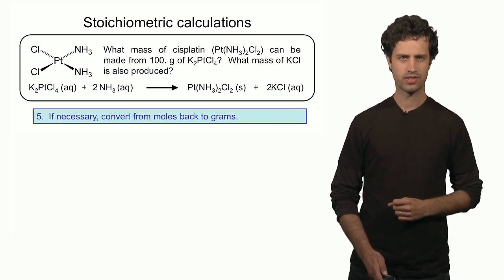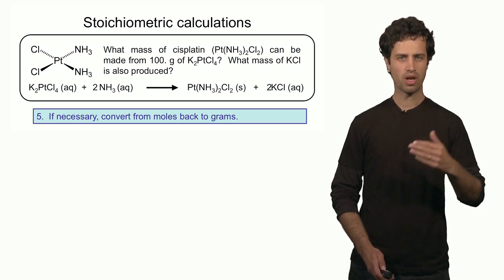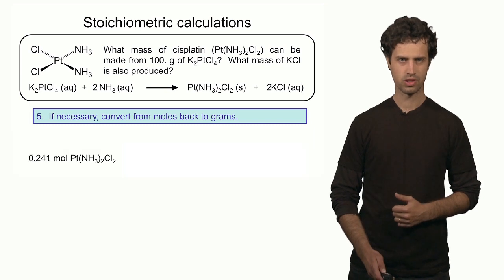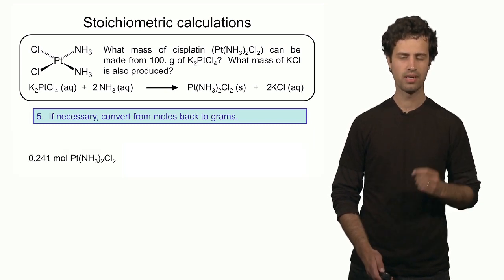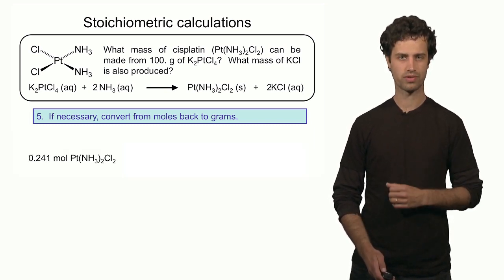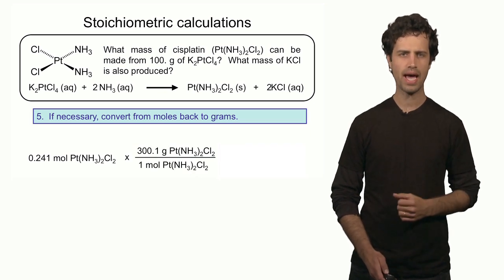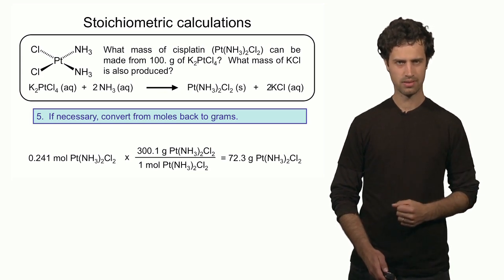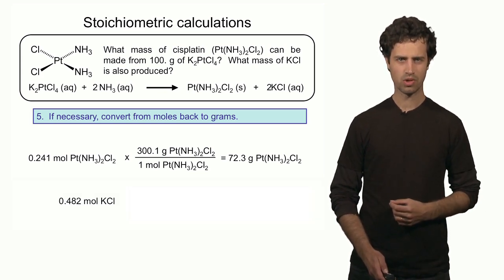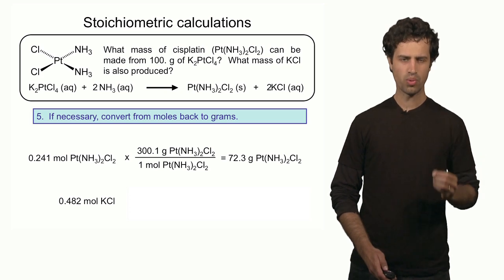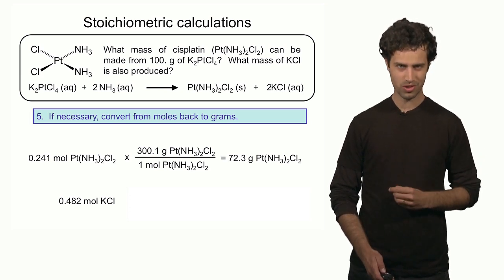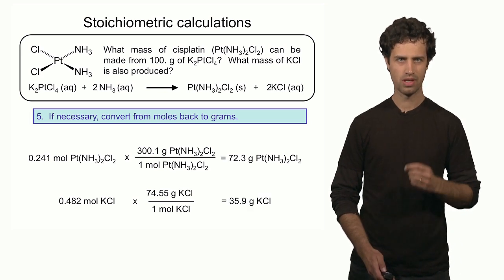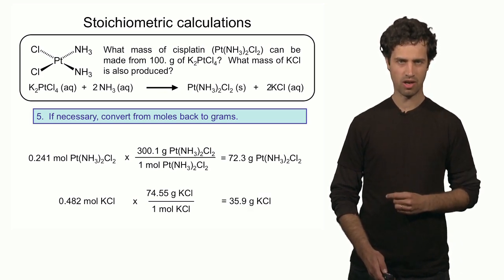The last step is to convert the moles of the products into grams. Taking 0.241 moles of cisplatin and multiplying by its molar mass gives 72.3 grams of cisplatin. For potassium chloride, 0.482 moles times its molar mass gives 35.9 grams of potassium chloride.